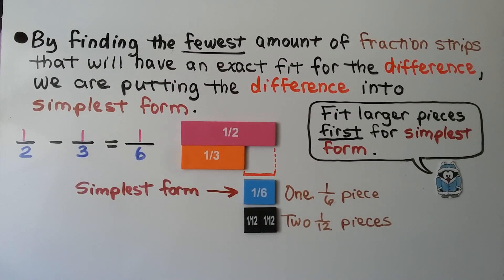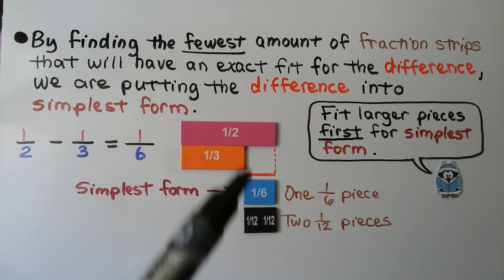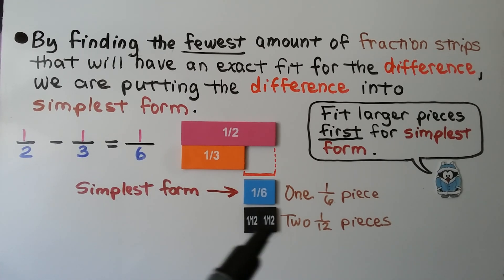By finding the fewest amount of fraction strips that will have an exact fit for the difference, we're putting the difference into simplest form. One one-sixth piece would be simplest form. Here we have two one-twelfth pieces. That's two pieces. So one-half minus one-third equals one-sixth in simplest form.